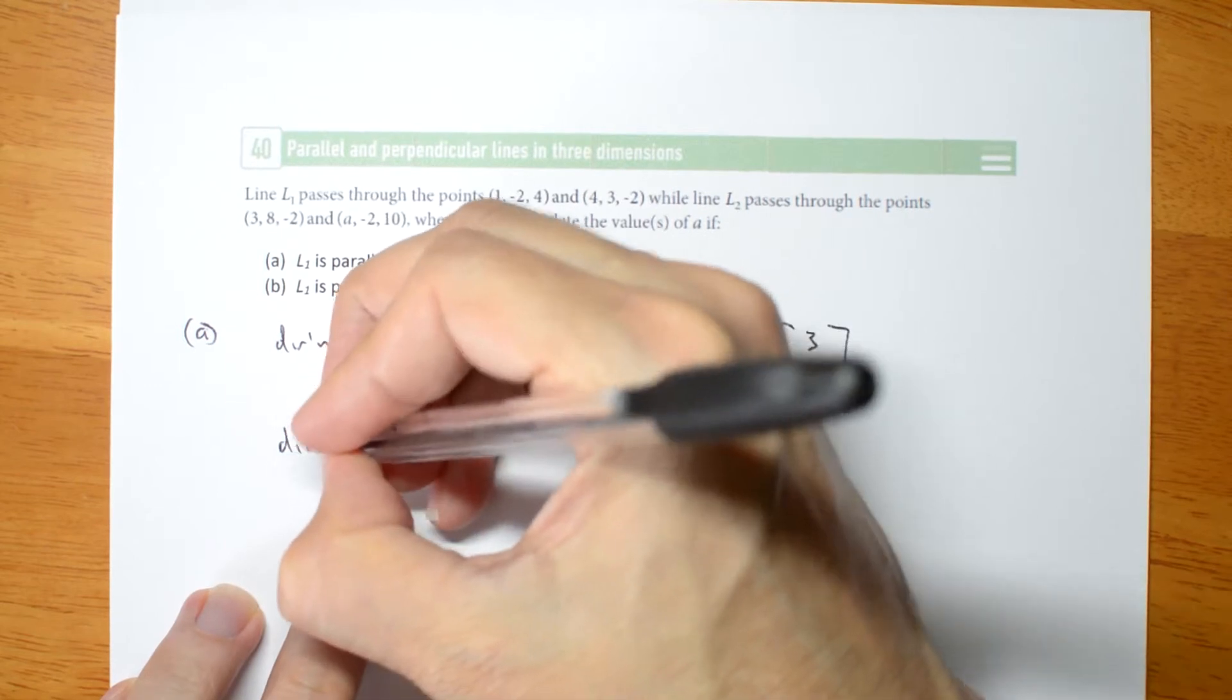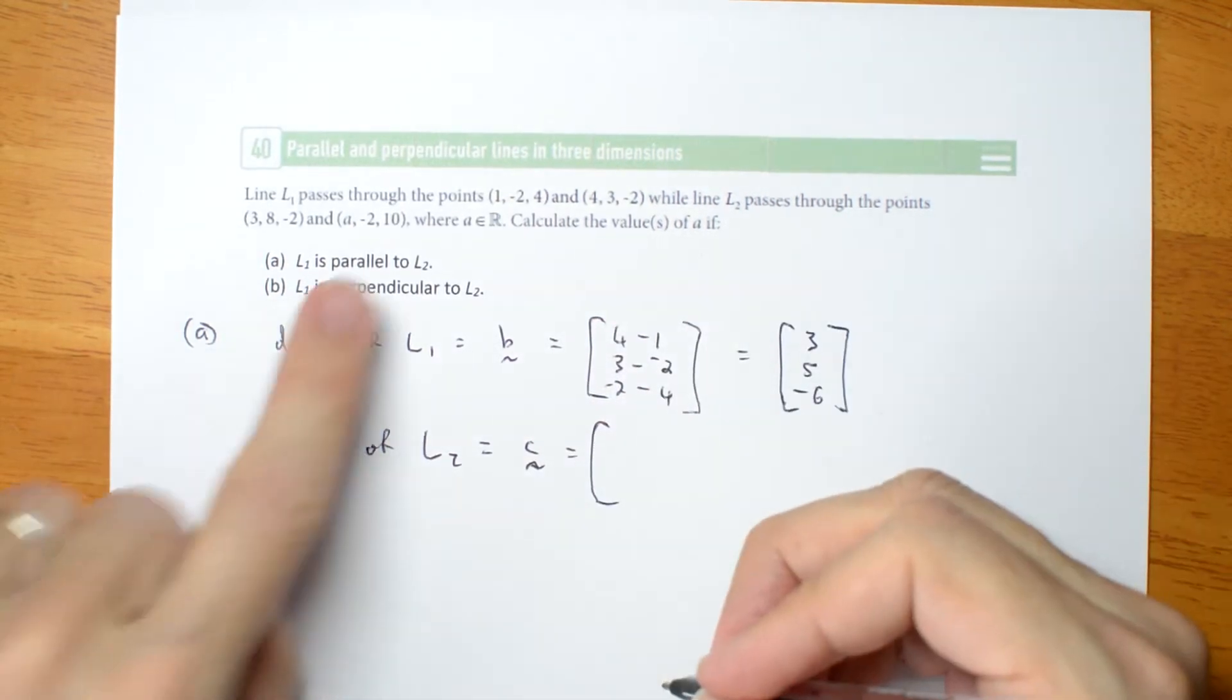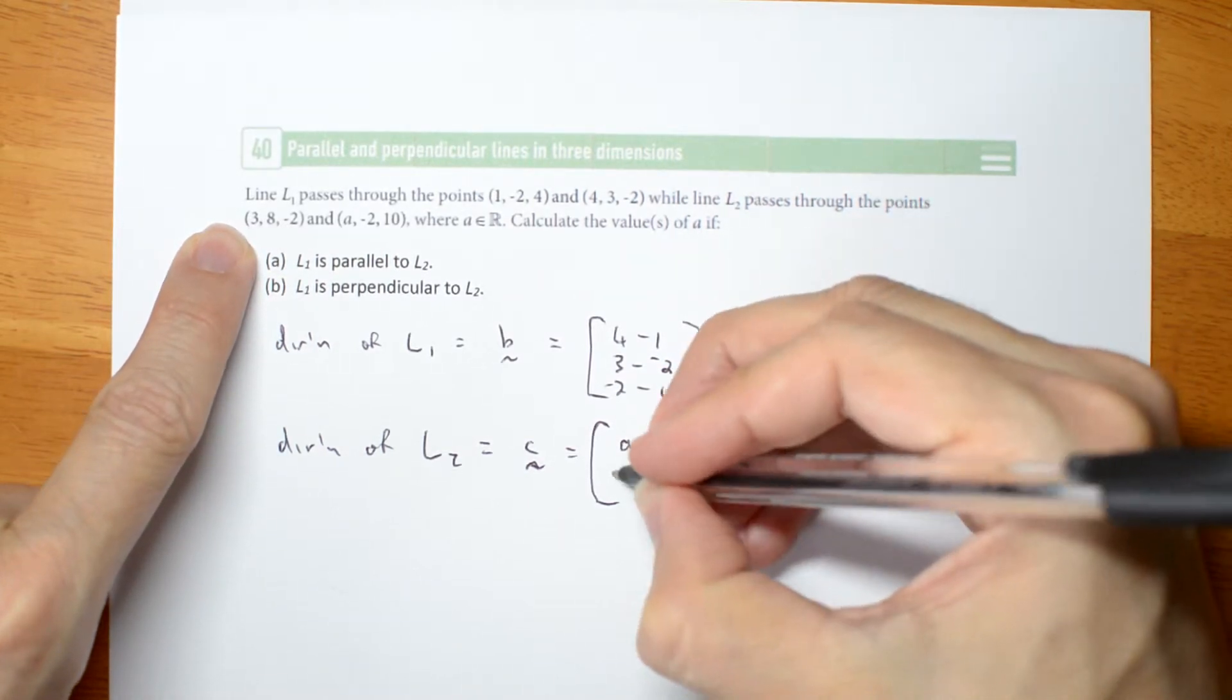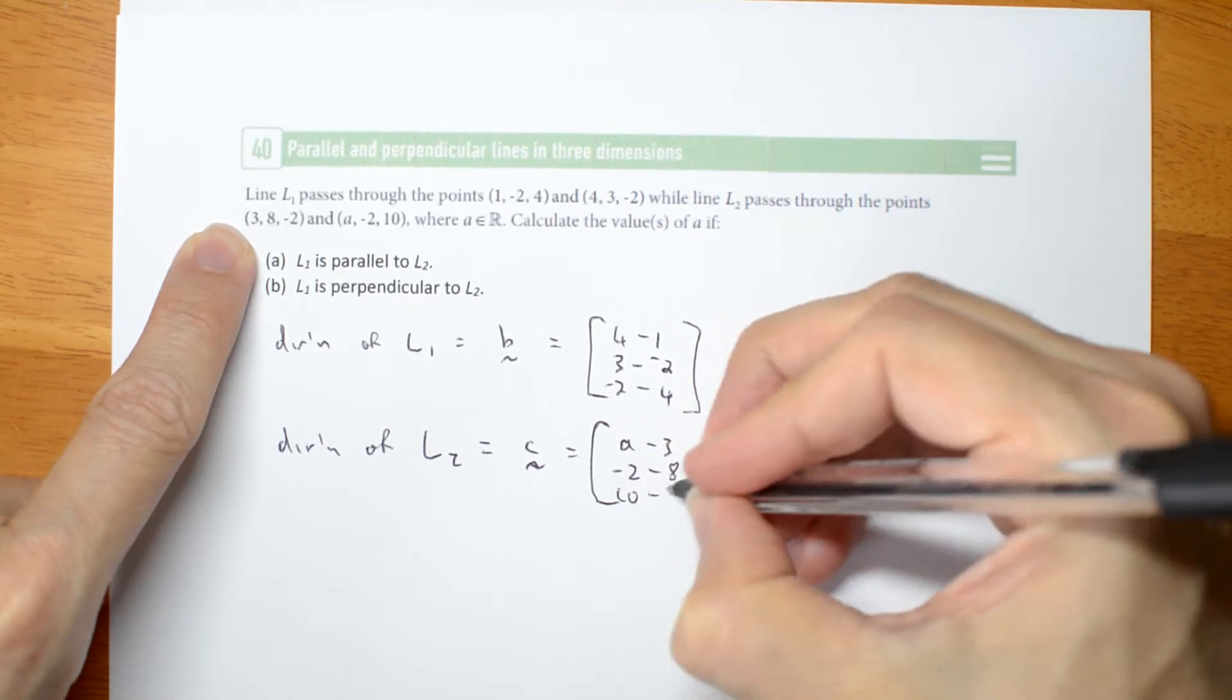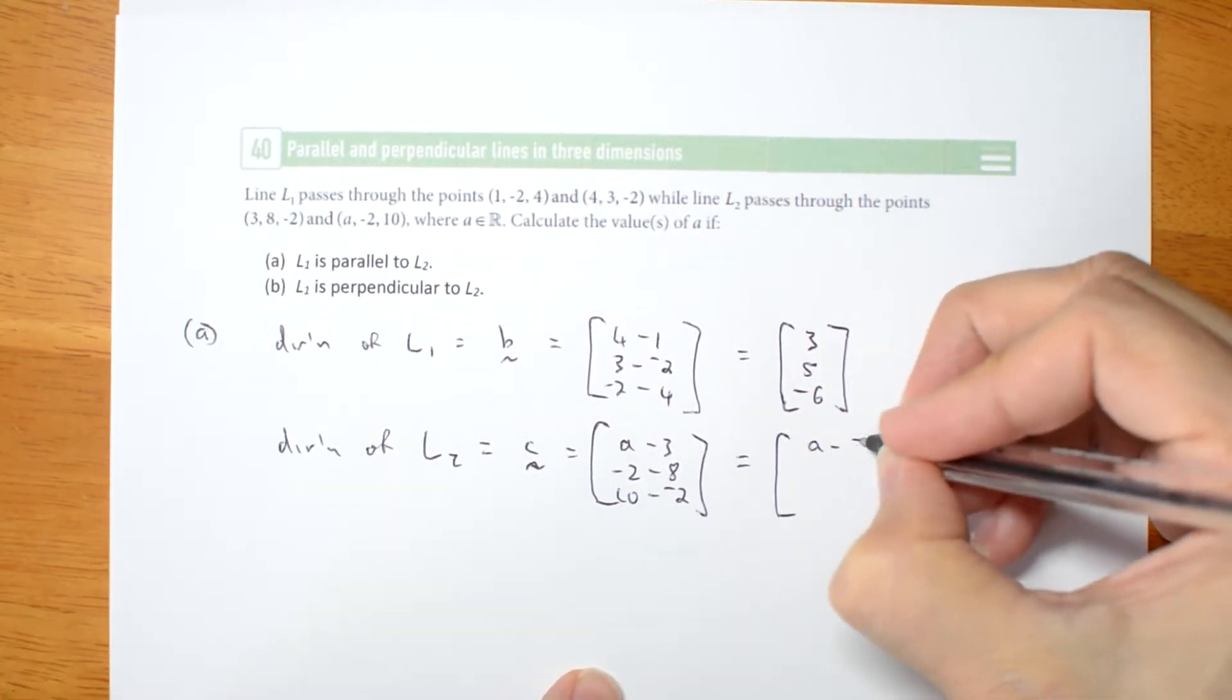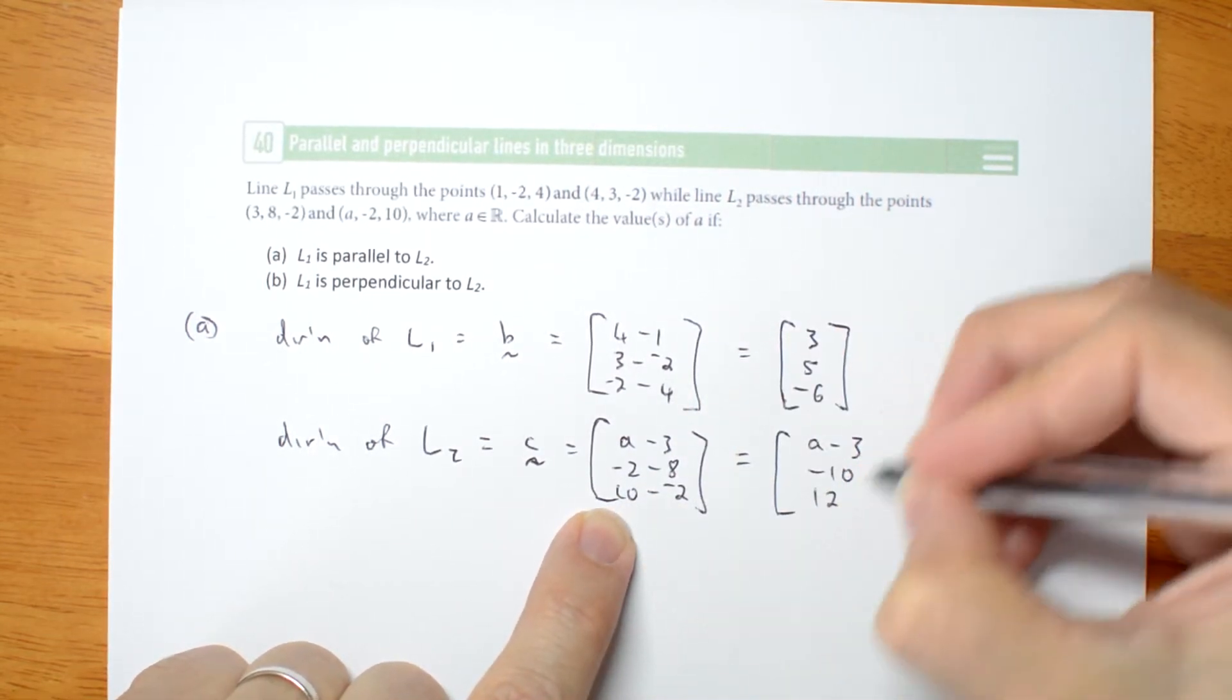And the direction of L2 we're going to call C is this point minus this one. A minus 3, negative 2 take 8, 10 take away negative 2, which is A minus 3 can't change, negative 2 take 8 is negative 10, and 10 plus 2 is 12.